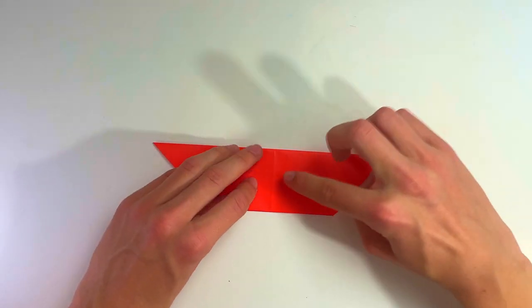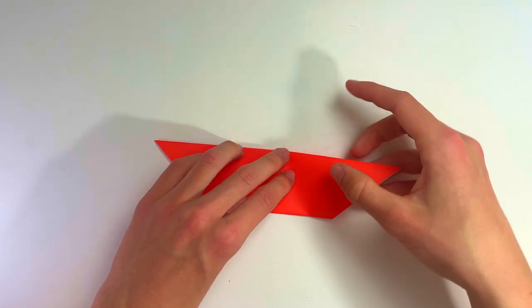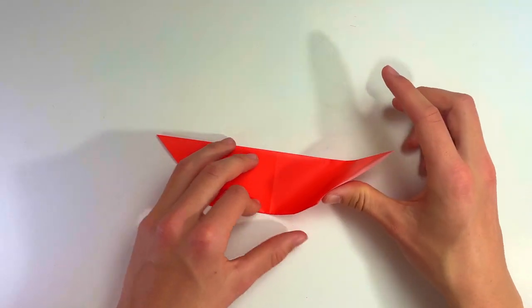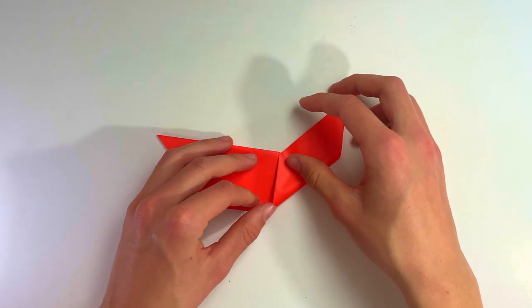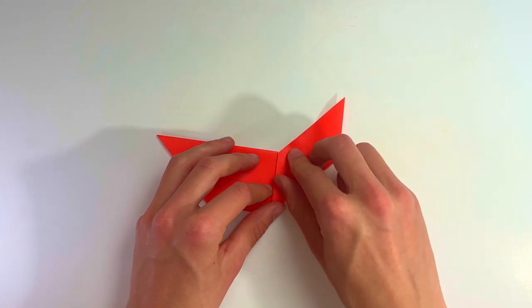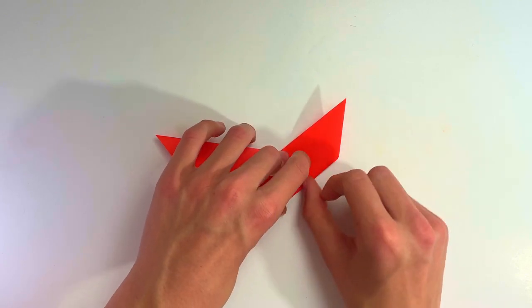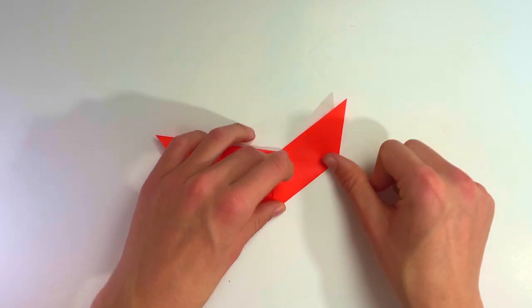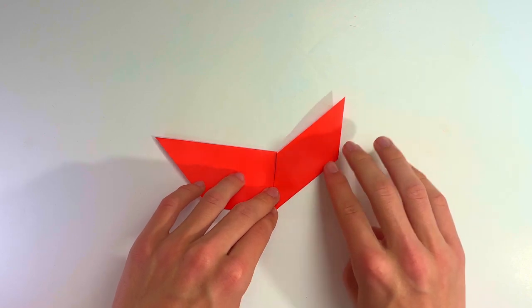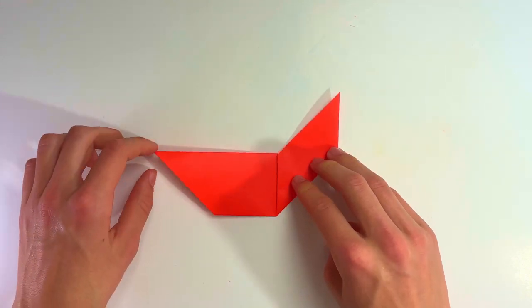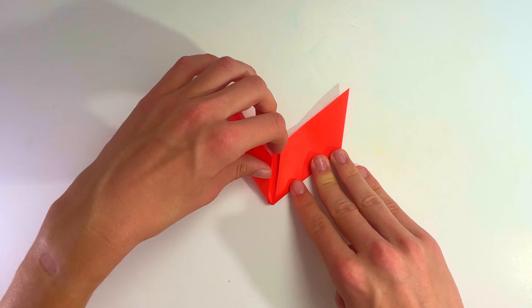Fold this edge up to the middle crease here. Have a look at how I do it before you do it. You just bring it up and align it—that's the fold you need to be the most precise on. Flatten this one; it's really important. Now do the same thing on the left side. Take the point and bring it upwards.